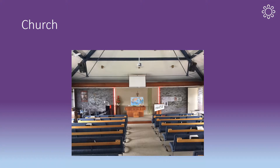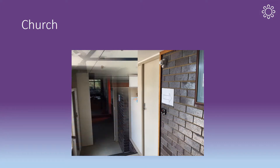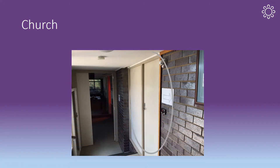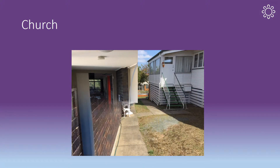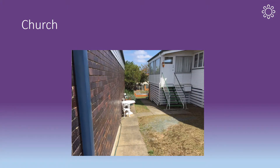In the event that these exits are blocked, the secondary exit is via the door on the right of the auditorium. Occupants should move to the front of the church and proceed into the hallway. The first door on the left of the hallway is an exit door. Move through the door, turn left and walk between the church and the manse to the front of the manse, which serves as the assembly area.